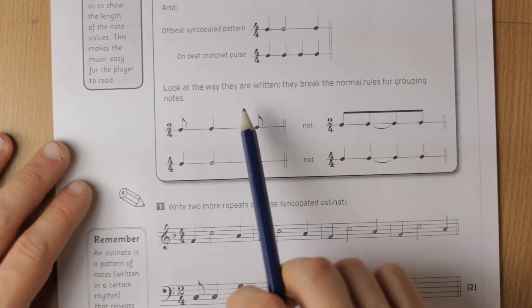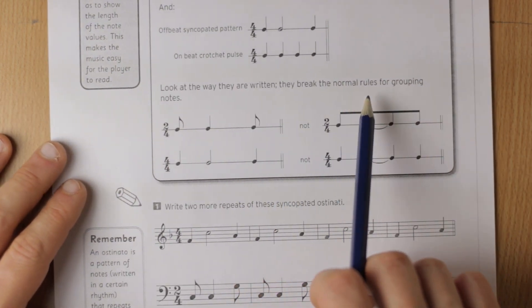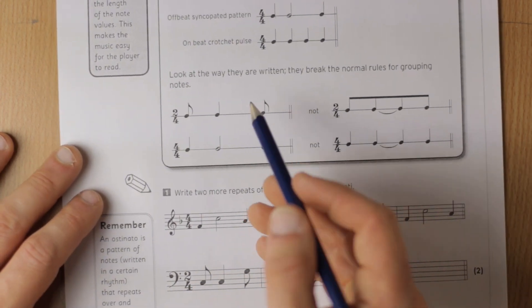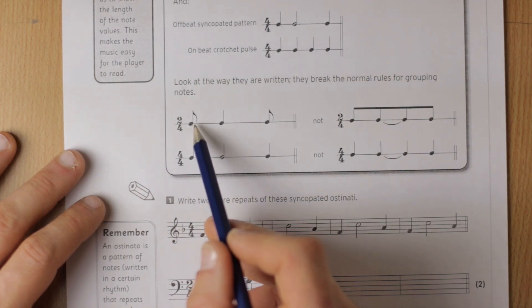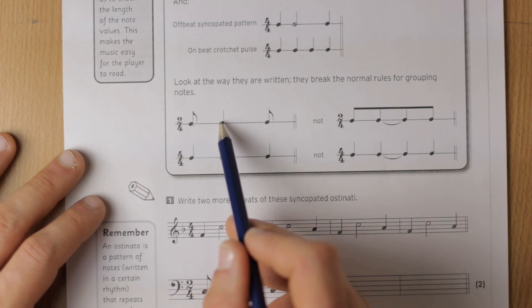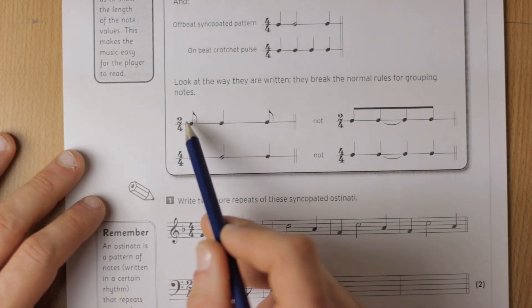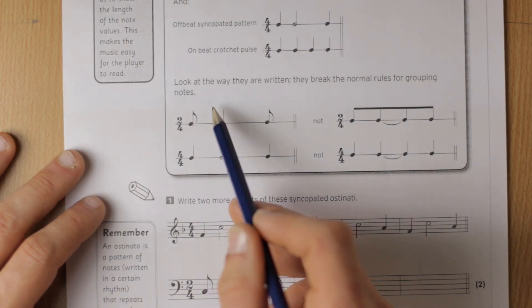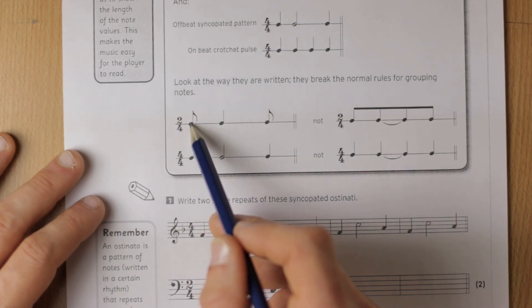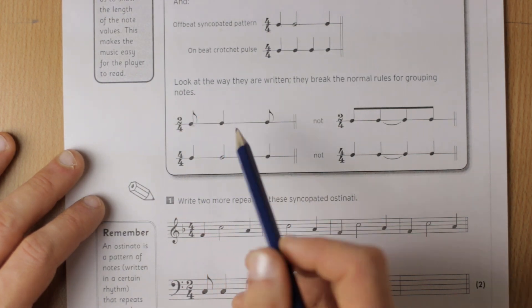Look at the way they are written. They break the normal rules for grouping notes. So here we've no longer got this pairing of quaver and then another quaver to pair up with that to keep the beats, the crotchet beats together. Remember when you've got four at the bottom, you want to be thinking grouping in crotchets. Here we've kind of messed that up.